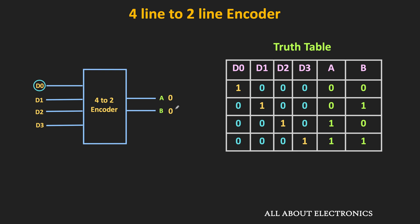When D1 is high, the output is 0,1. When D2 is high, the output is 1,0. And when D3 is high, the output is 1,1. In this way, the binary encoder encodes the input information into a compact code.